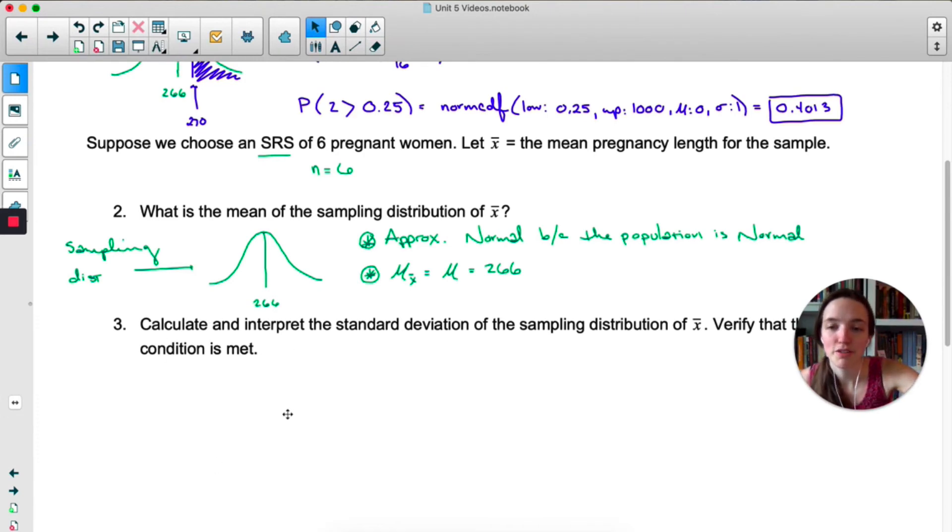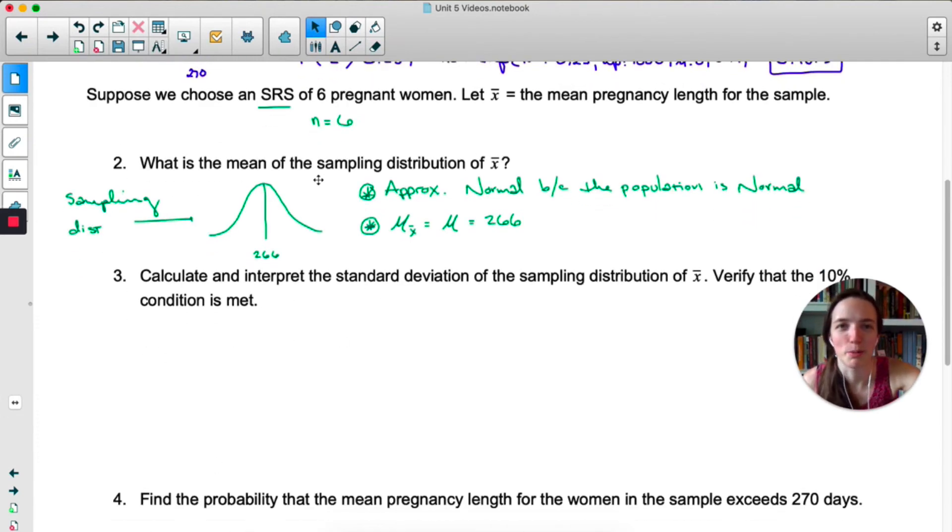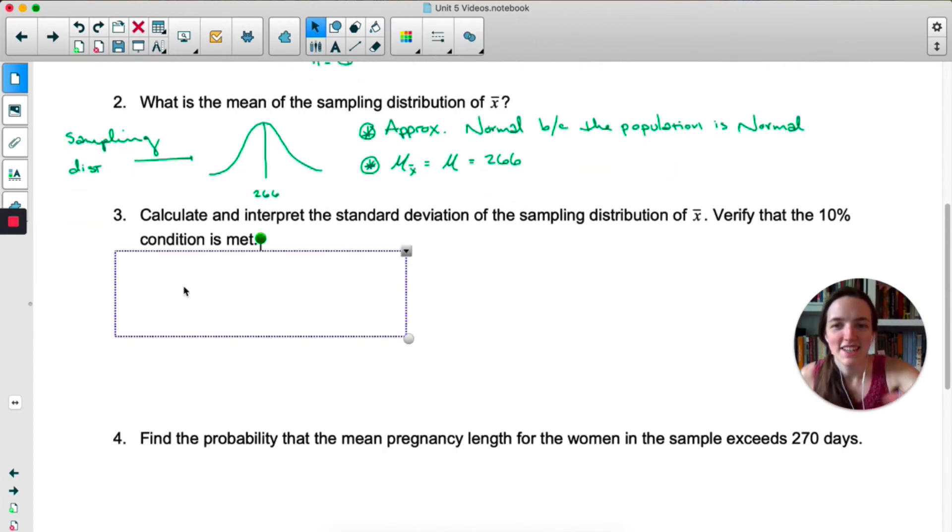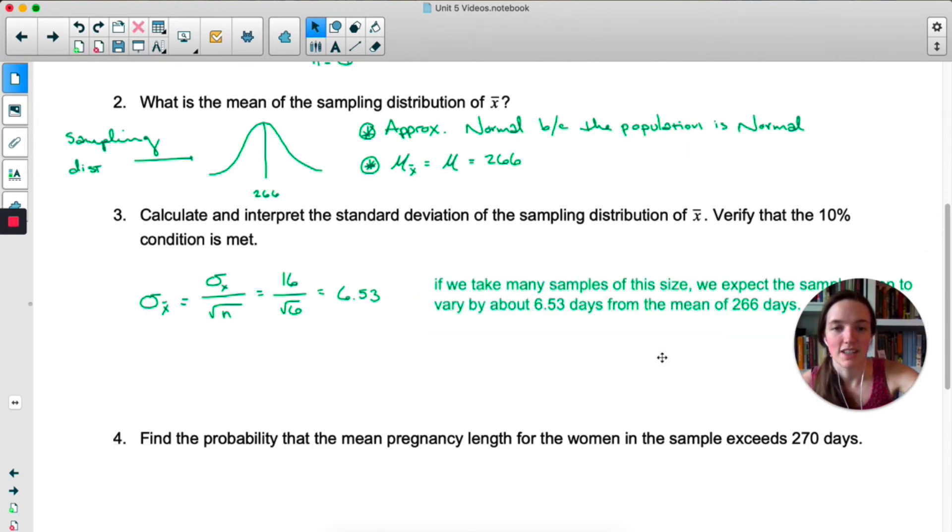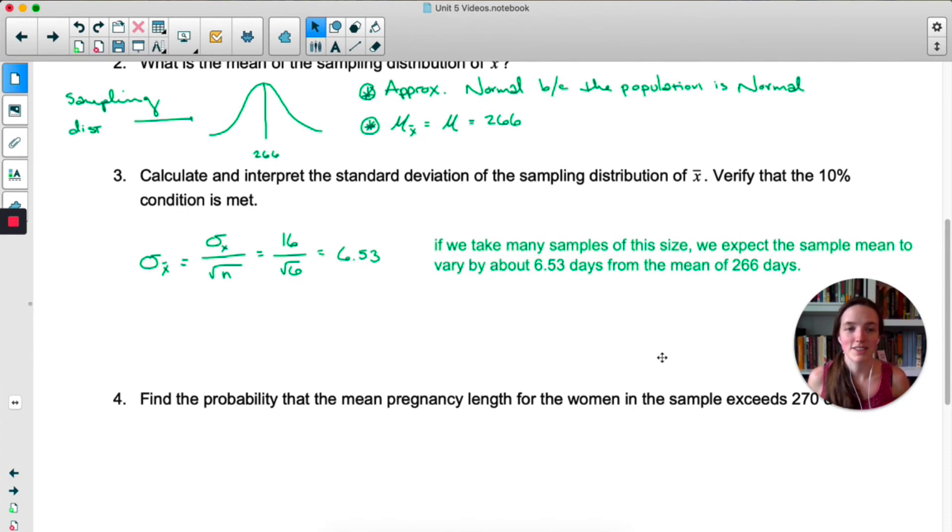Now if number three asks you about standard deviation, these could probably be in the same question. But standard deviation, we just use our formula, we take 16, which was the standard deviation of the population, divide by root n, here's our new standard deviation. To interpret, that would just be to say if we take many samples of this size, we would expect the sample mean to vary by about 6.3, sorry, 6.53 days from the mean of 266 days. Notice the context.